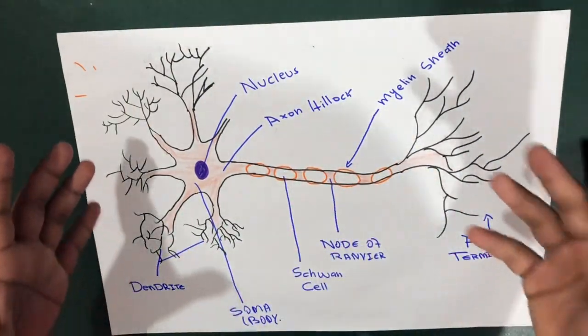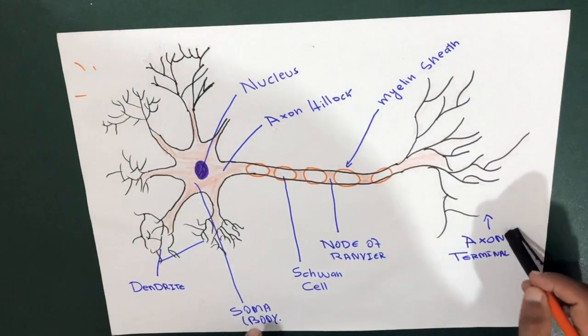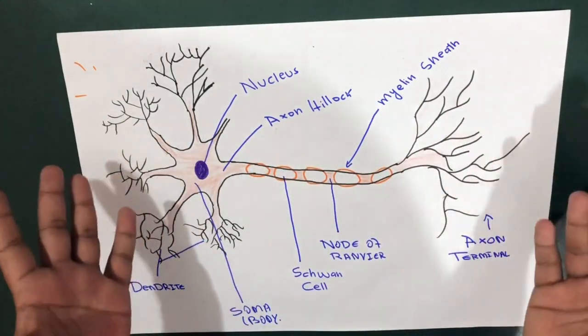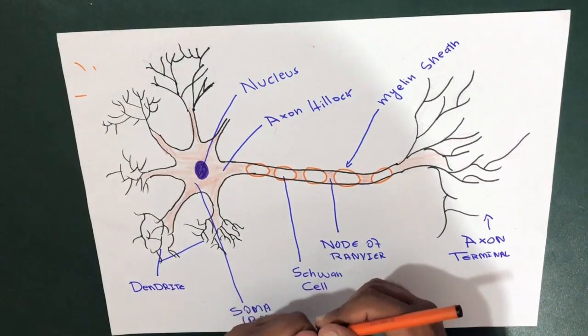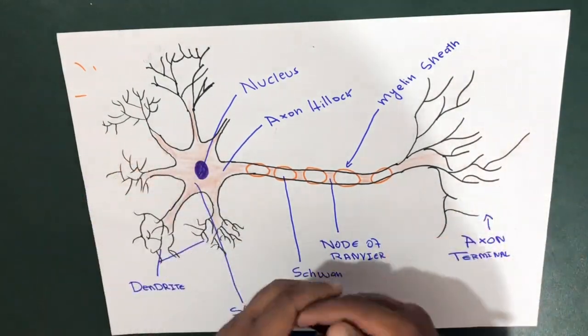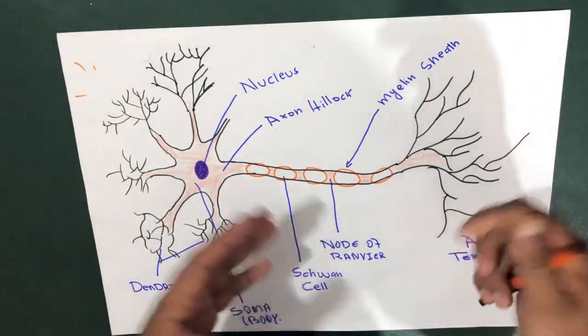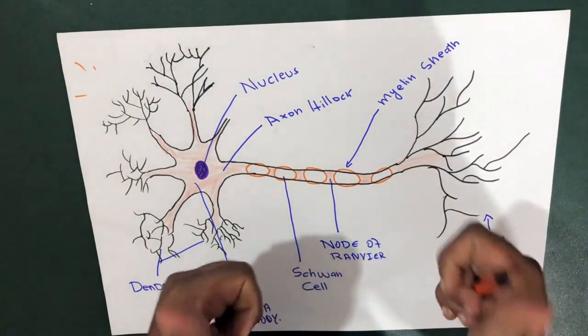All right, this is the basic structure of the neuron, including the dendrites, soma, and axon. That's all about the basic structure. That's it, that's so simple. If you need to ask anything, please make sure to comment and let us know how we can help you in your studies. Thank you.